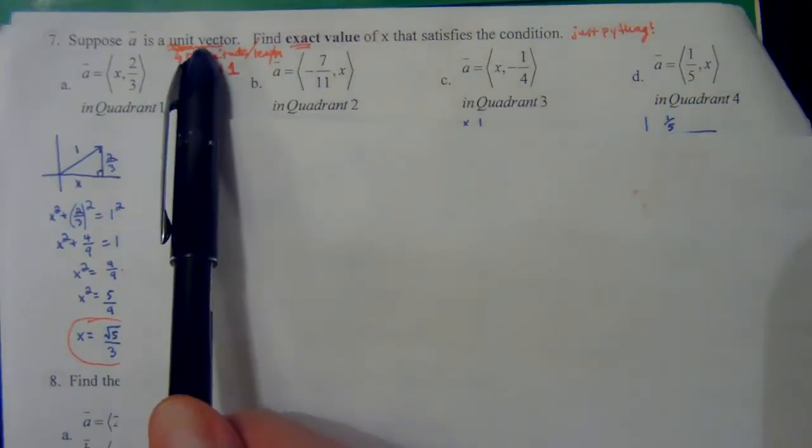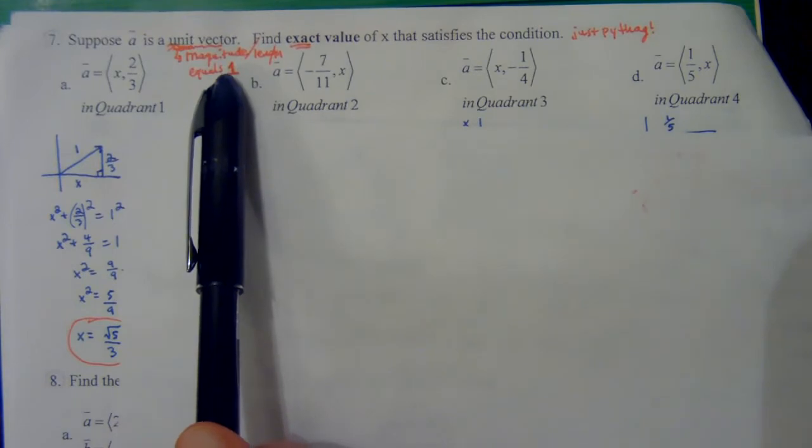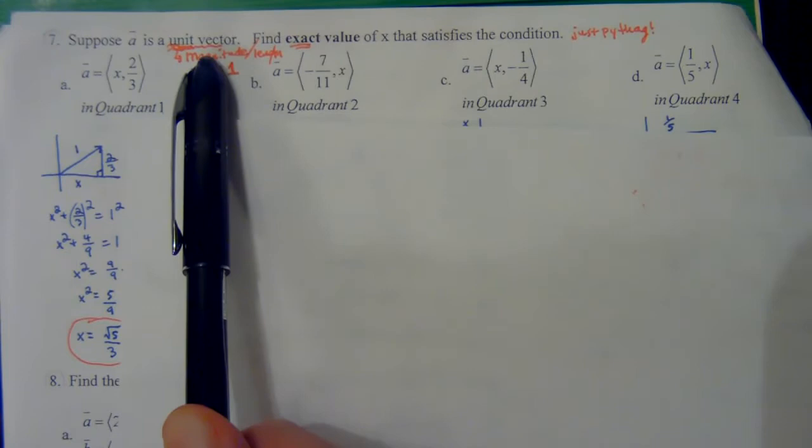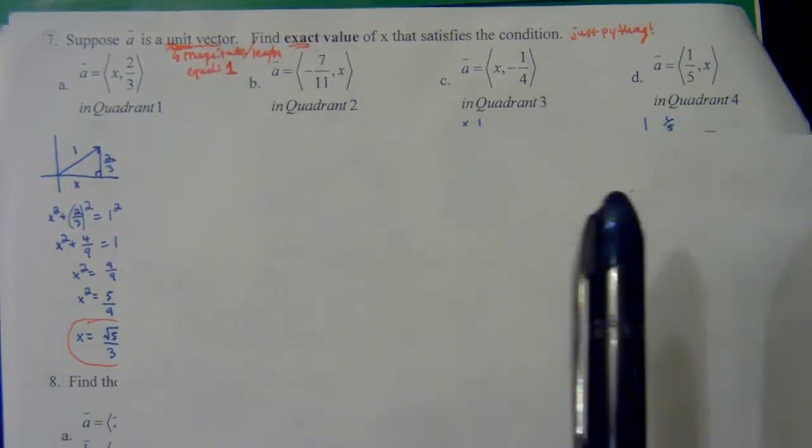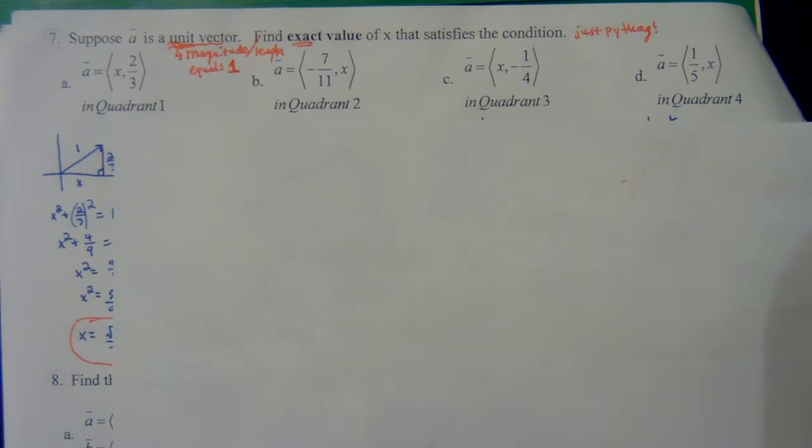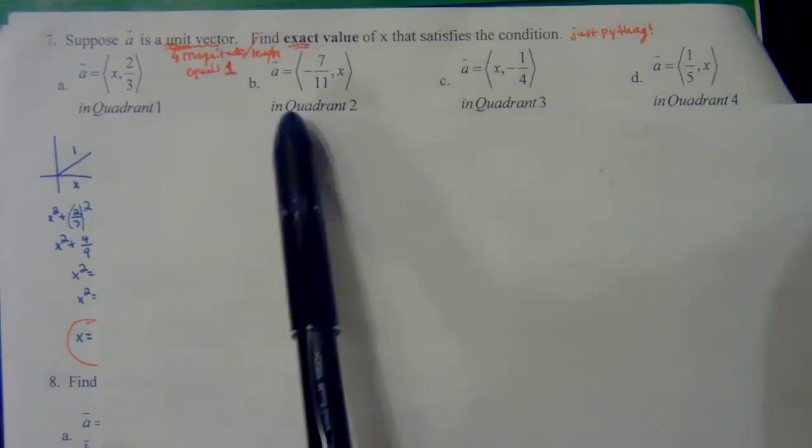When it says unit vector, that's a vector with length one. When it says find the value of x when you have a unit vector, that's just going to be the Pythagorean theorem. These are real easy Pythagorean theorem problems, and what gives it away is talking about a unit vector.